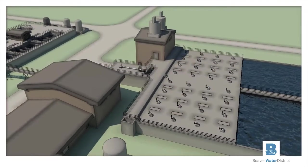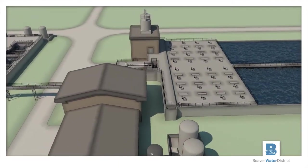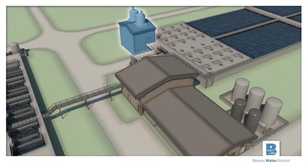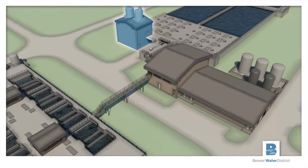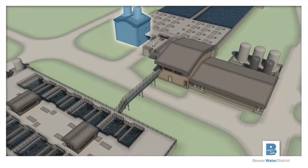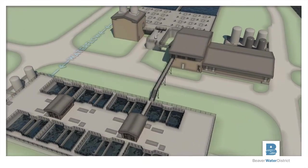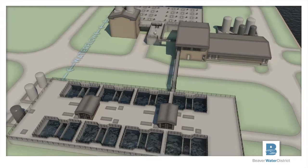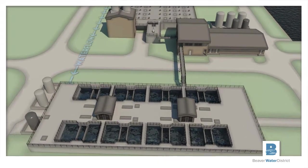The cleaner water that flows out of the end of the sedimentation basin is called settled water. The pH of the settled water is raised by the addition of lime. Lime is delivered as a fine powder and is stored in tall silos. The settled water flows from the sedimentation basins to the filters through a buried pipe.